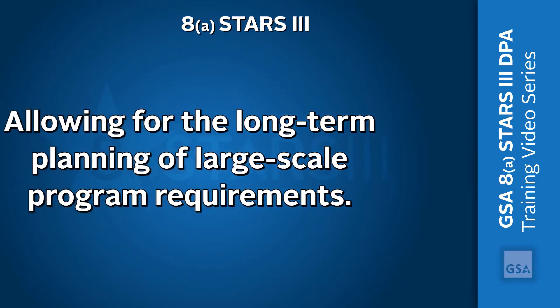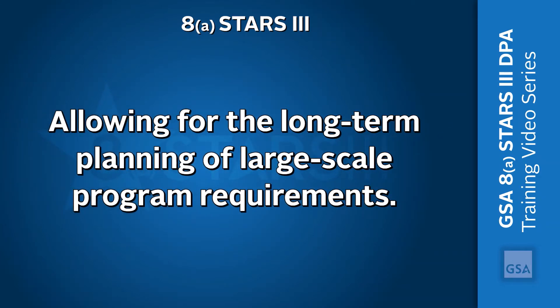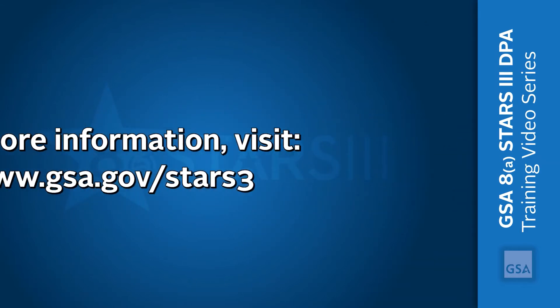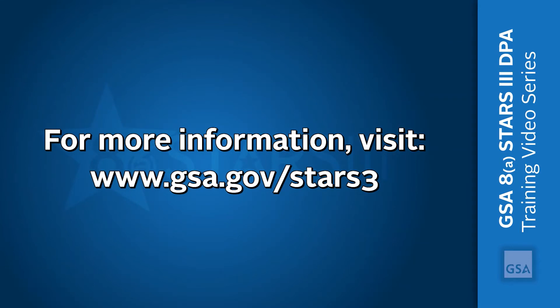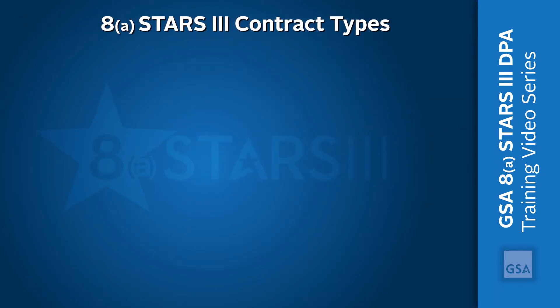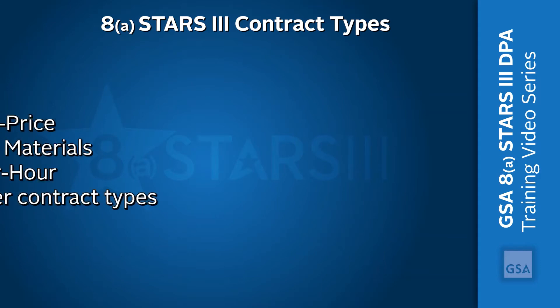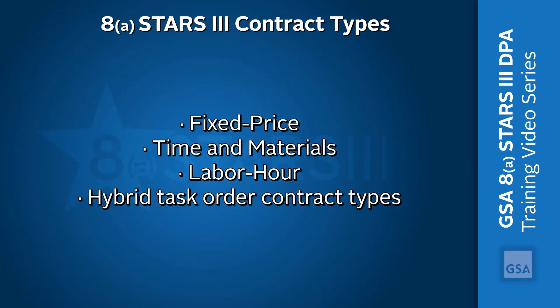This allows for the long-term planning of large-scale program requirements while also strengthening opportunities for 8A small businesses. Visit the 8A STARS III webpage, www.gsa.gov/STARSIII, for more information on the 8A STARS III period of performance. We understand that requirements are not one-size-fits-all. That's why we offer a variety of contract types. 8A STARS III offers fixed price, time and materials, labor hour, and hybrid task order contract types to meet mission requirements.